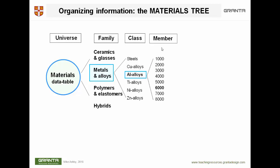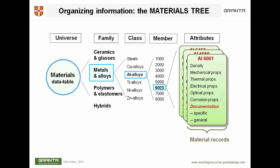Here's one subset of these. If we open this, we begin to get down to the level of a record for various 6000 series aluminum alloys. A record has data for density and mechanical properties, thermal, electrical, optical, and a lot more, including environmental properties.